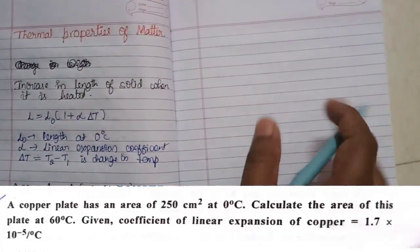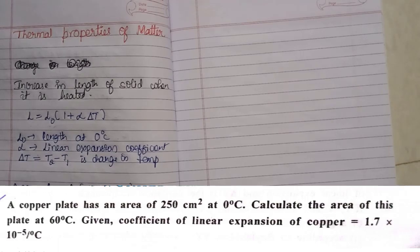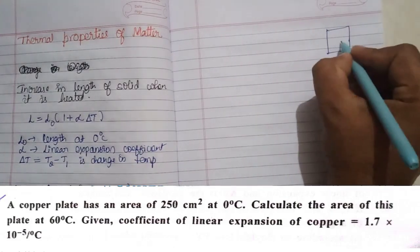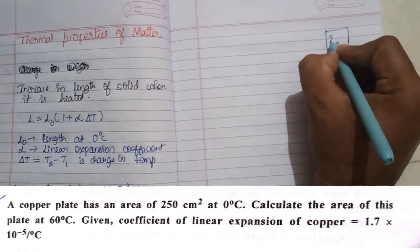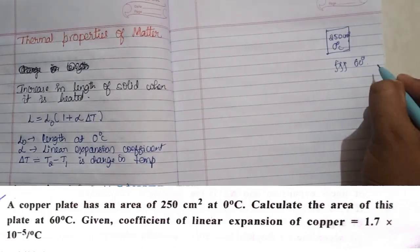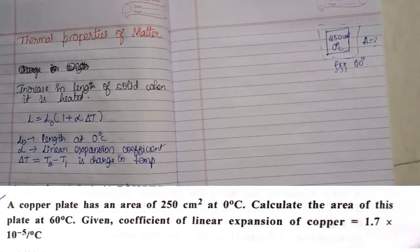First problem: A copper plate has an area of 250 centimetre square at 0 degree centigrade. Calculate the area of this plate at 60 degree centigrade. Given the coefficient of linear expansion of copper is 1.7 into 10 to the power of minus 5 per degree centigrade. Here they have taken a copper plate; at 0 degree centigrade its area is 250 centimetre square. When it is heated up to 60 degrees, there will be an increase in area, and we have to calculate that area.